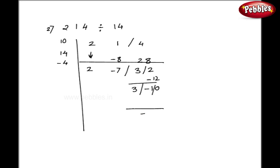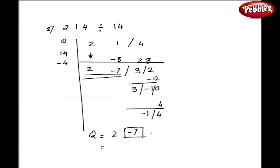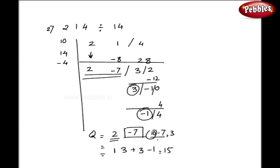Though minus 10 is less than 14, I have to proceed further because I got the remainder as a negative number. So I take minus 1 down. Minus 1 into minus 4 is 4, and here I get 4. Now I got a positive remainder and my calculations are over. As a quotient I get 2 and minus 7, but this cannot be negative. So I subtract from the base: 10 minus 7 is 3, and the 10 comes from this 2, so my 2 becomes 1. Adding this 3 and minus 1 to the quotient, my quotient becomes 15 and my remainder is 4.